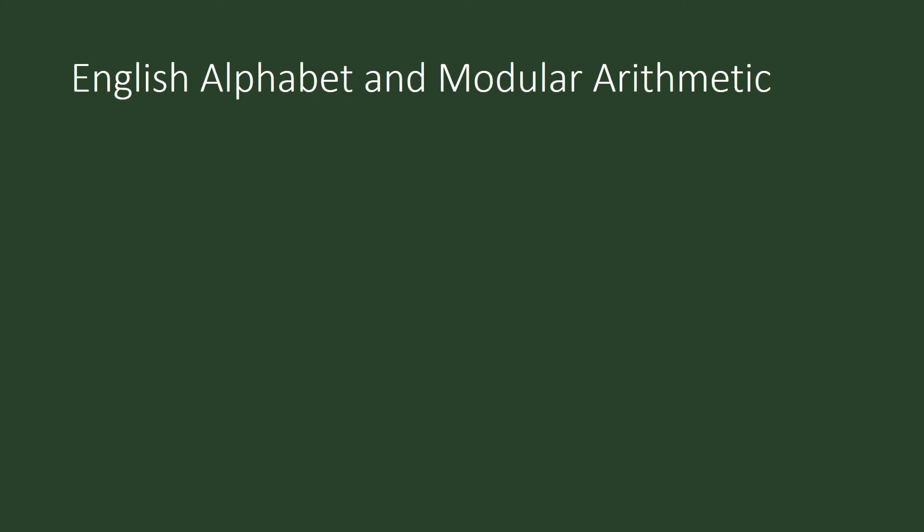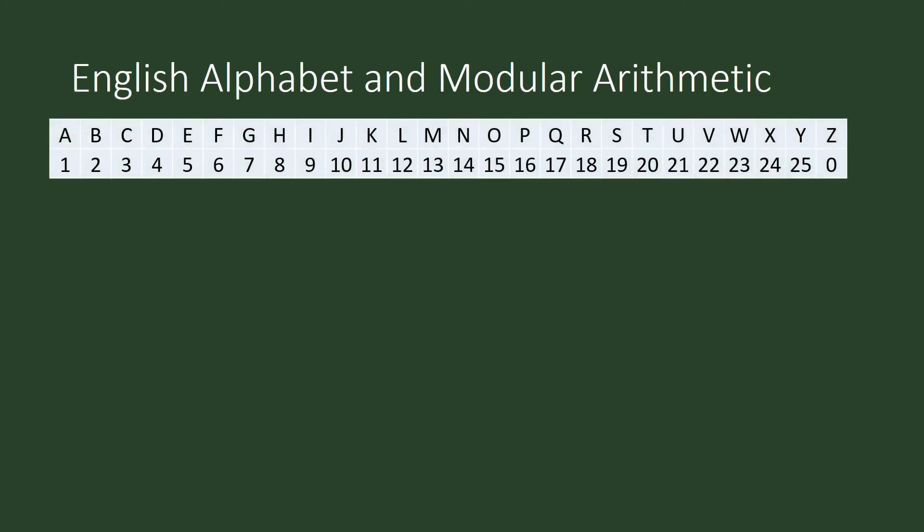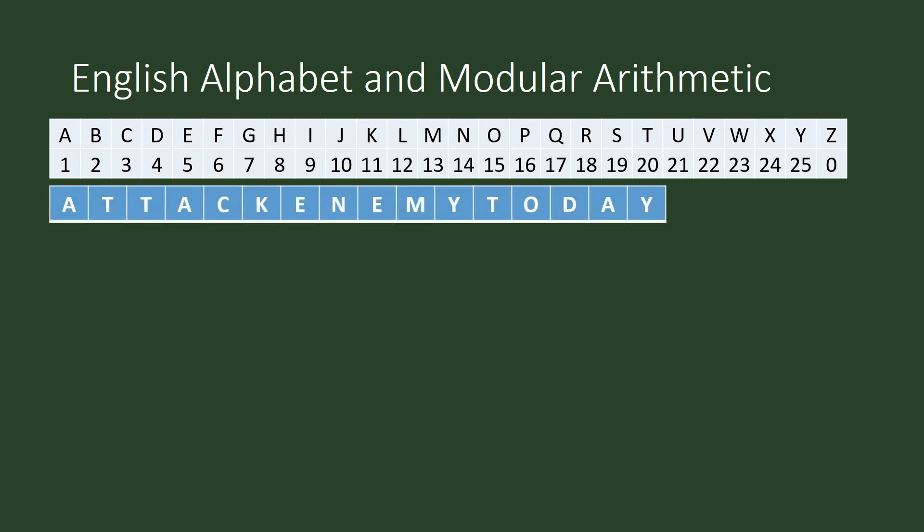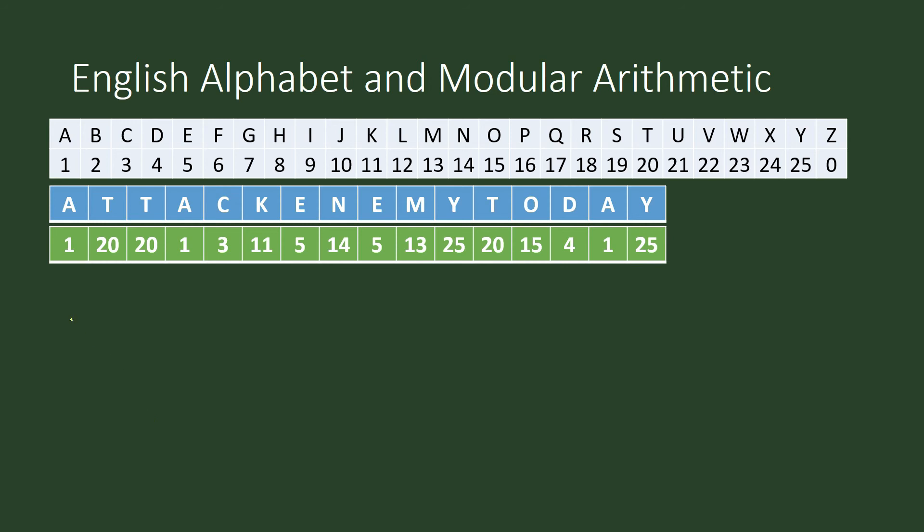Let's say you are a commander, a general, or a captain of a squad or a company. And this is the message you want to send to your squad who are out there in the field: Attack enemy today. The numeric equivalent of that message is this one. Where did this string of integers come from? It came from this.